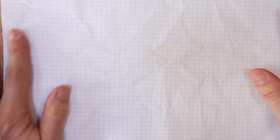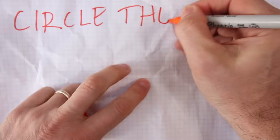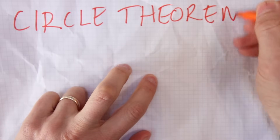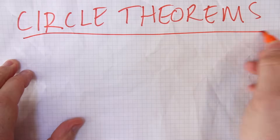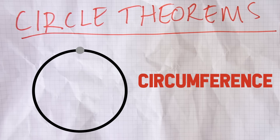So first up, what is a theorem? A theorem is just a fact which has been proven to be true 100% of the time - it's always going to be true. And the language to do with circles: the first bit of language we need to be familiar with is the circumference. That's just the distance around the circle, as you can see there.